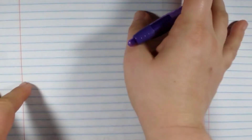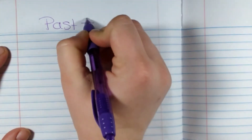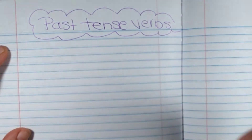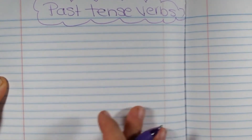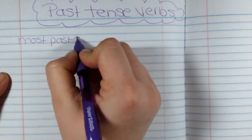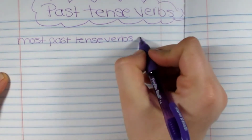We talked about present tense verbs. Now it is time for us to focus on past tense verbs, which means something that has already happened. We're going to be talking about regular verbs, and then I'm going to give you a list of irregular verbs that you can use as reference. So first of all, we're going to title our page past tense verbs. Most past tense verbs are formed by adding -ed on the end of the word.